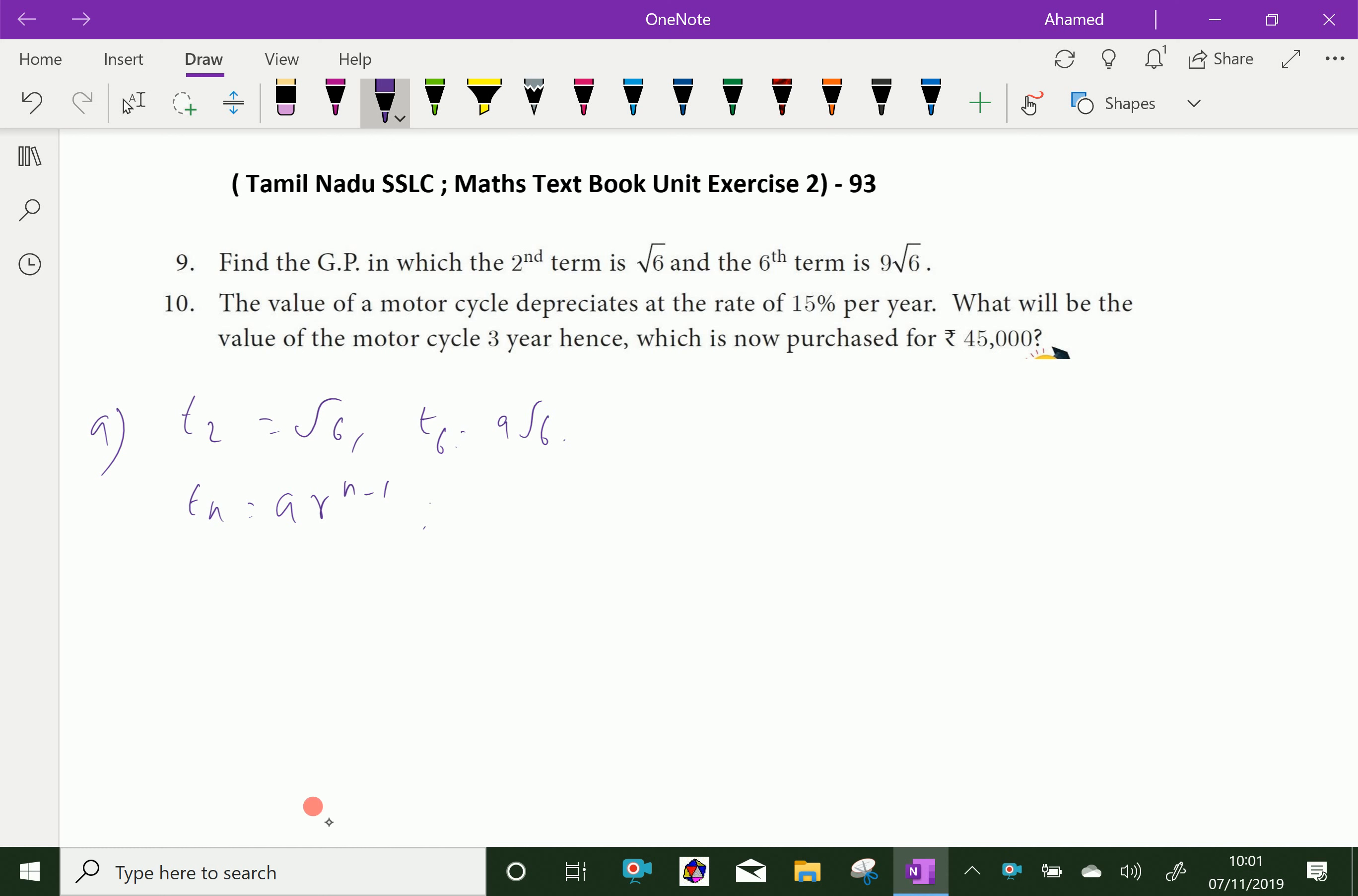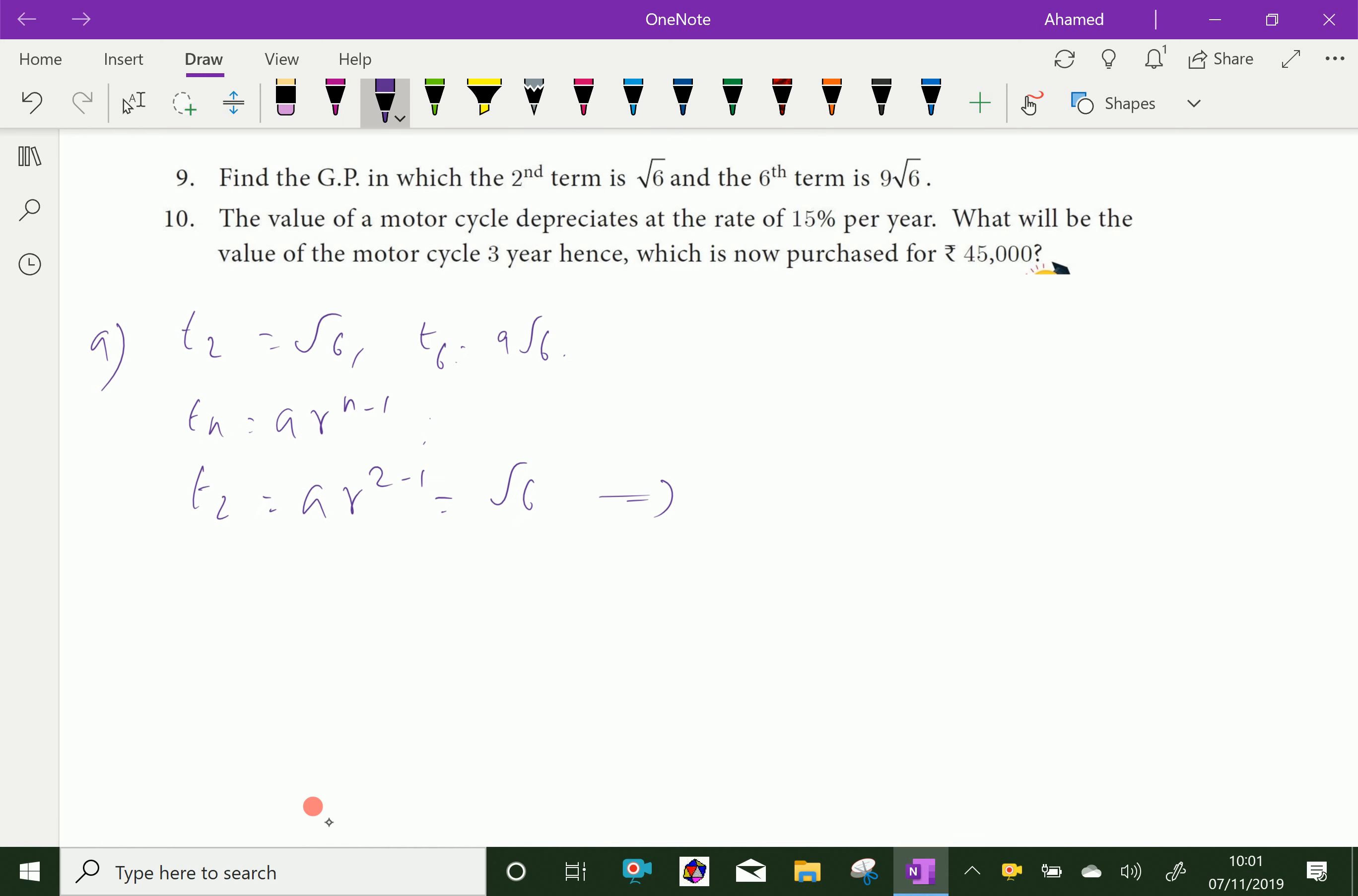From that we can write T2 equals ar^(2-1), which equals √6 given. We can say ar equals √6, because 2 minus 1 is 1.